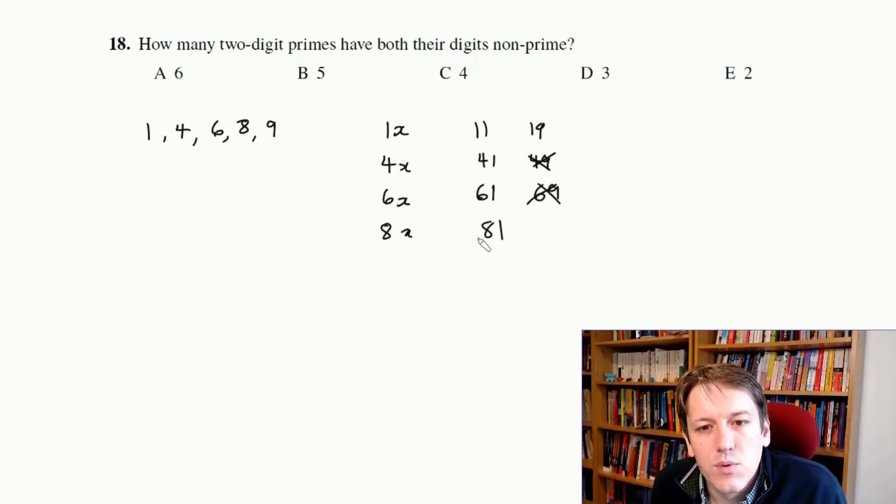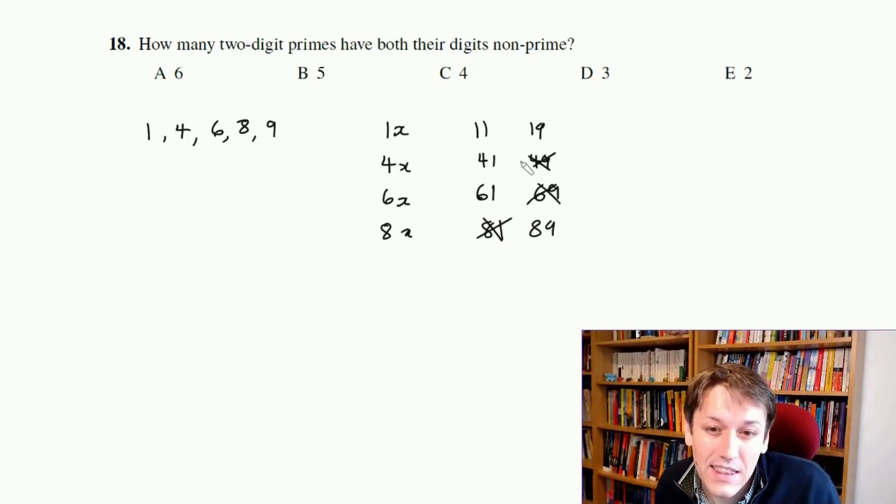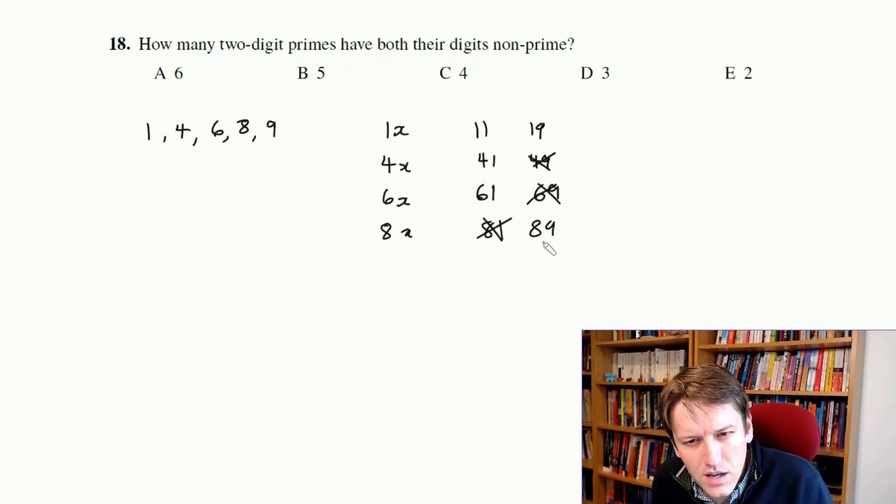If I look at the 8x's, that's 81. Well, that's 9 squared, so definitely not that. And 89 here, again, that doesn't have 2, 3, 5, or 7 as a factor here, and you can just check all of those, right? I should have checked 7 for 61 as well, but it's obviously not a multiple of 7. So that's a prime.